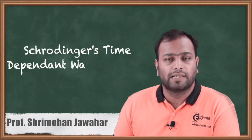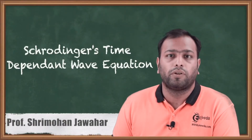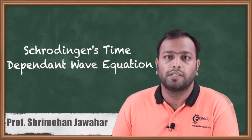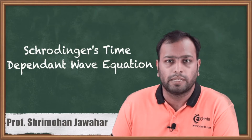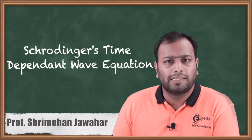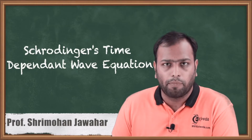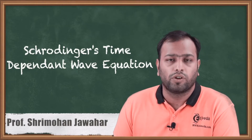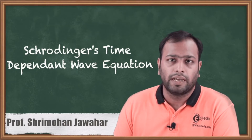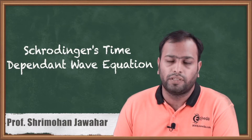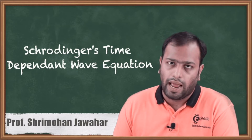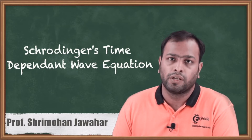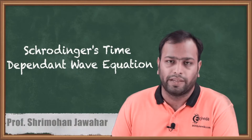Hello friends. In previous classes we studied about de Broglie's hypothesis and Heisenberg's uncertainty principle. But since it was just the hypothesis, Schrödinger, an Austrian physicist, in the year 1926, proved this theory and derived an equation for this. So let's begin.